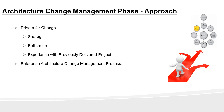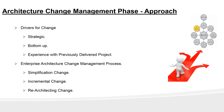Next is the enterprise change management process — that is, how changes are managed, what technologies are applied, and what methodologies are used. TOGAF recommends classifying architectural changes into one of three categories: simplification change, incremental change, and re-architecting change.